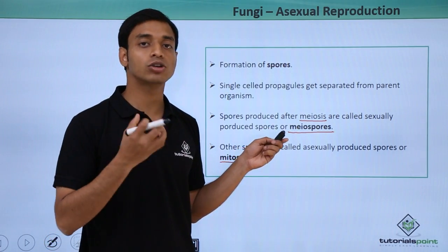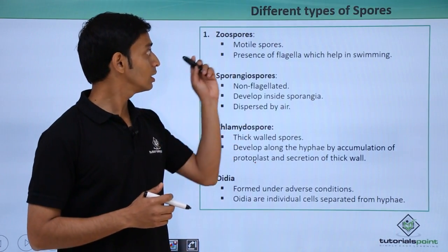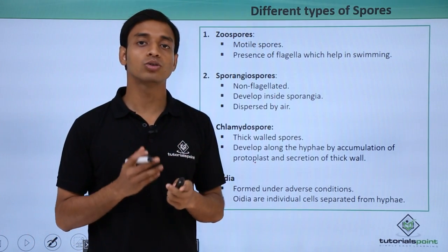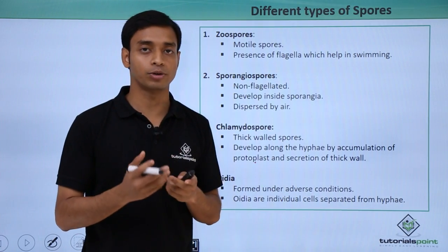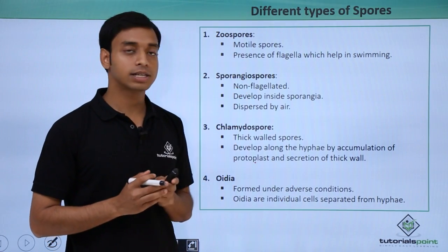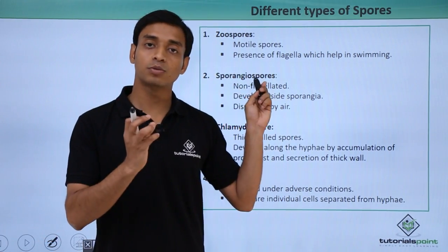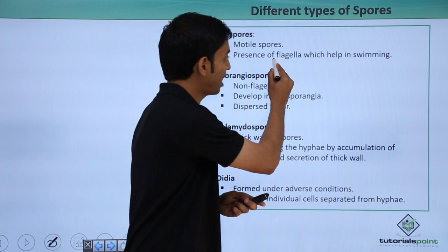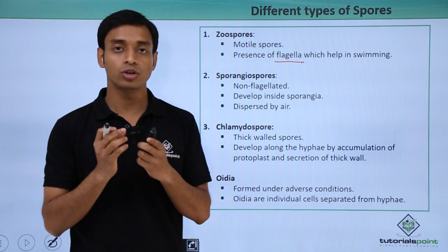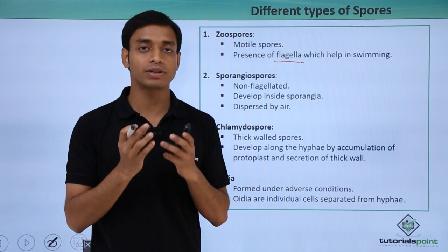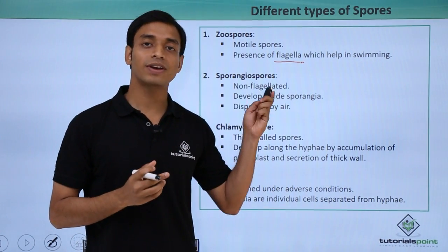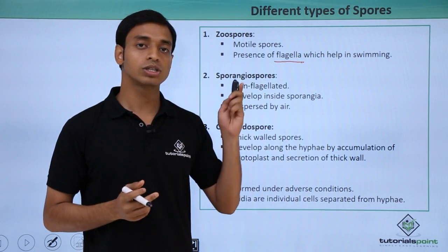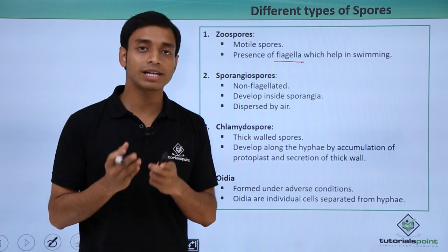The different types of spores used by fungi in order to reproduce — first, we will discuss zoospores. These are motile spores, meaning they can move, due to the presence of flagella. Flagella are whip-like structures present on the surface of the organism that help in swimming in a liquid medium.